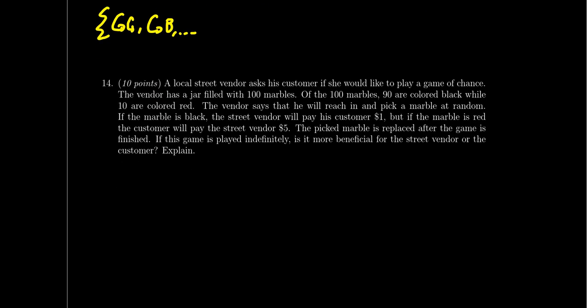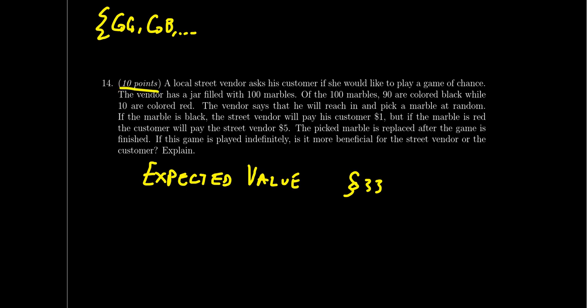Question fourteen is worth 10 points and is our last question from the probability chapter — it's about expected value. A random variable will be explained to you, such as a street vendor playing a marble game where you can win money by drawing marbles from a jar. You're expected to compute the expected value of that random variable. The expected value is like the average or mean — if you played this game over and over, what would you expect your average winnings to be? This was the entire topic of lesson 33.